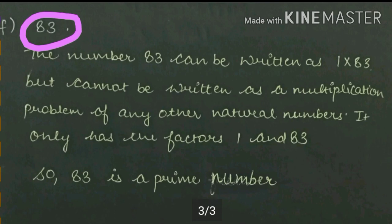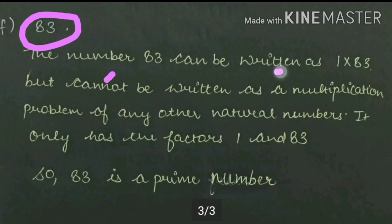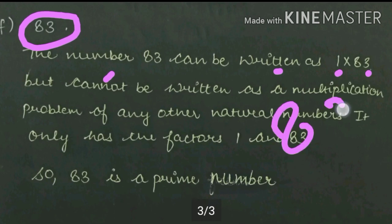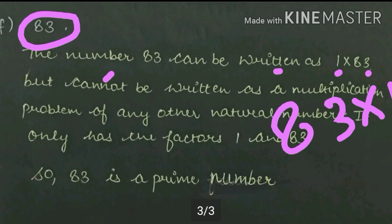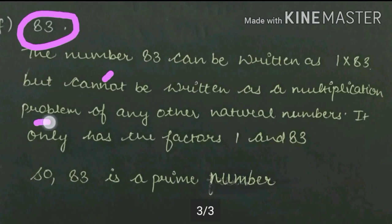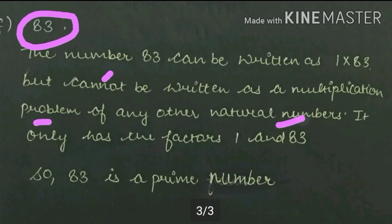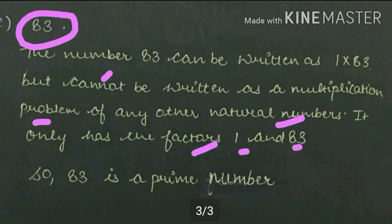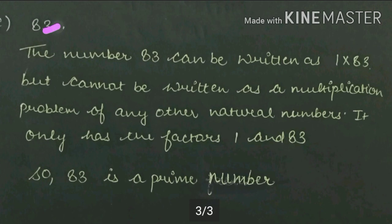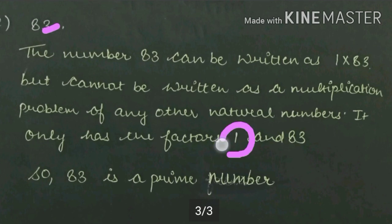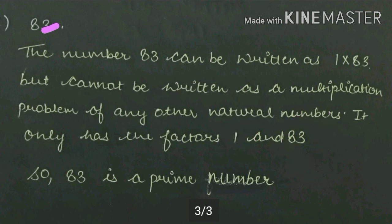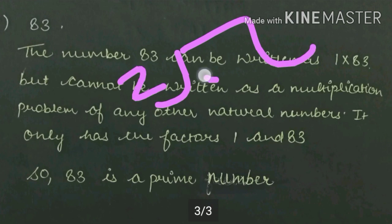Next part: 83. The number 83 can be written as 1 into 83 or 83 into 1, but cannot be written as a multiplication of any other natural number. It has the factors 1 and 83. Is 83 divisible? Let's check — if we divide 83 by 2...